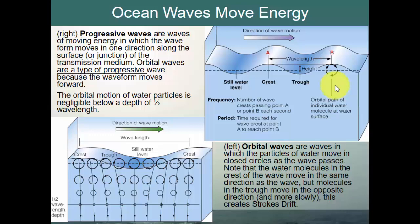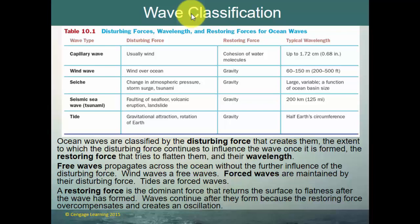Scientists classify waves by wave type, disturbing force, restoring force, and typical wavelength. Wave types include capillary waves, wind waves, a seiche, a seismic sea wave or tsunami, and a tide. The disturbing force of capillary waves and wind waves is wind. A seiche is caused by a change in atmospheric pressure or storm surge. A seismic sea wave is caused by faulting of the seafloor, a volcanic eruption, or a landslide. The disturbing force of all tides is the gravitational attraction of the Earth, Sun, and Moon, and the rotation of the Earth.